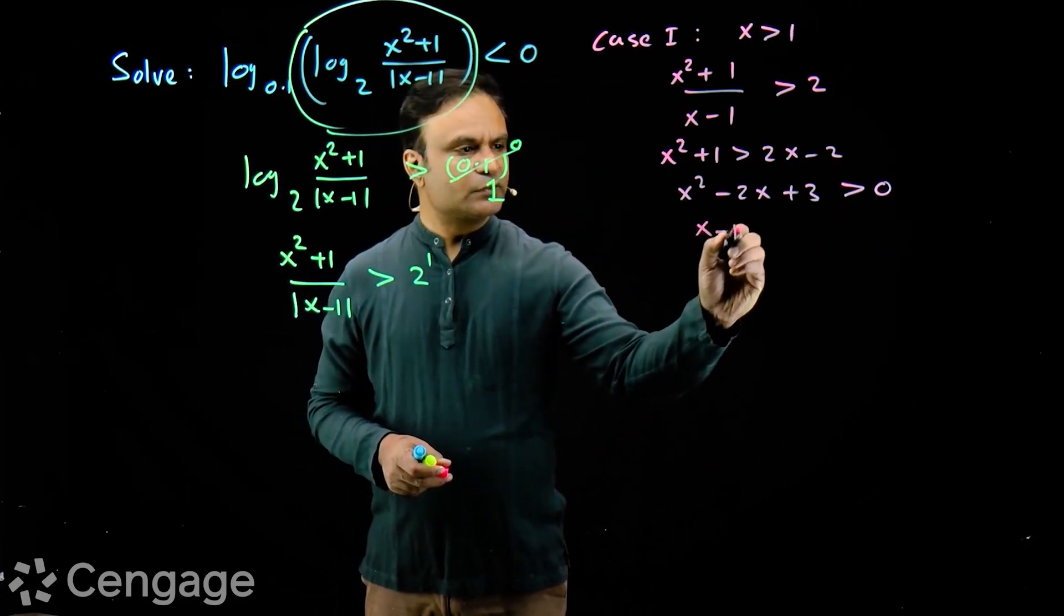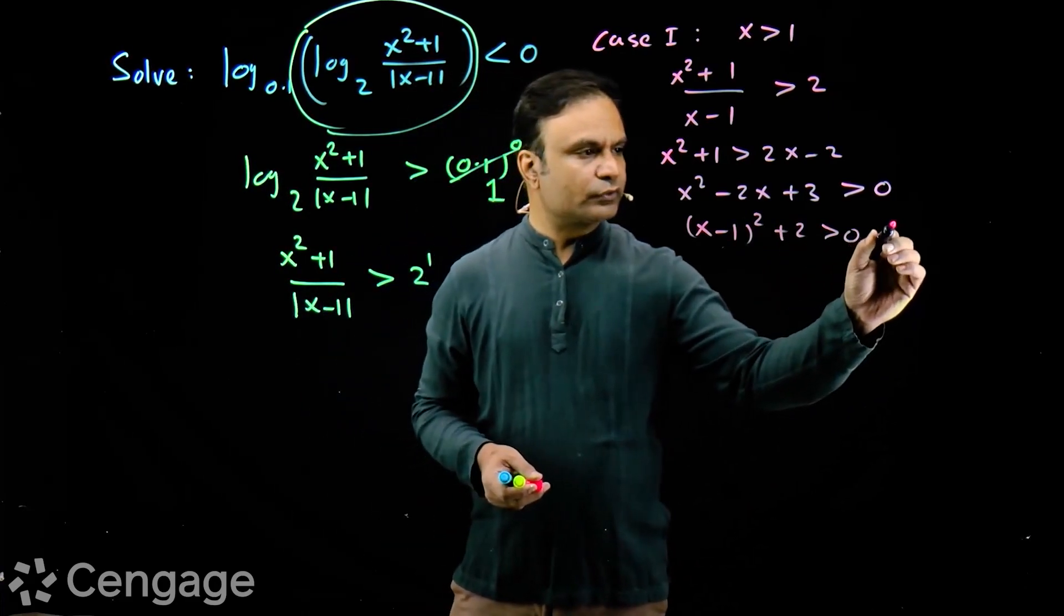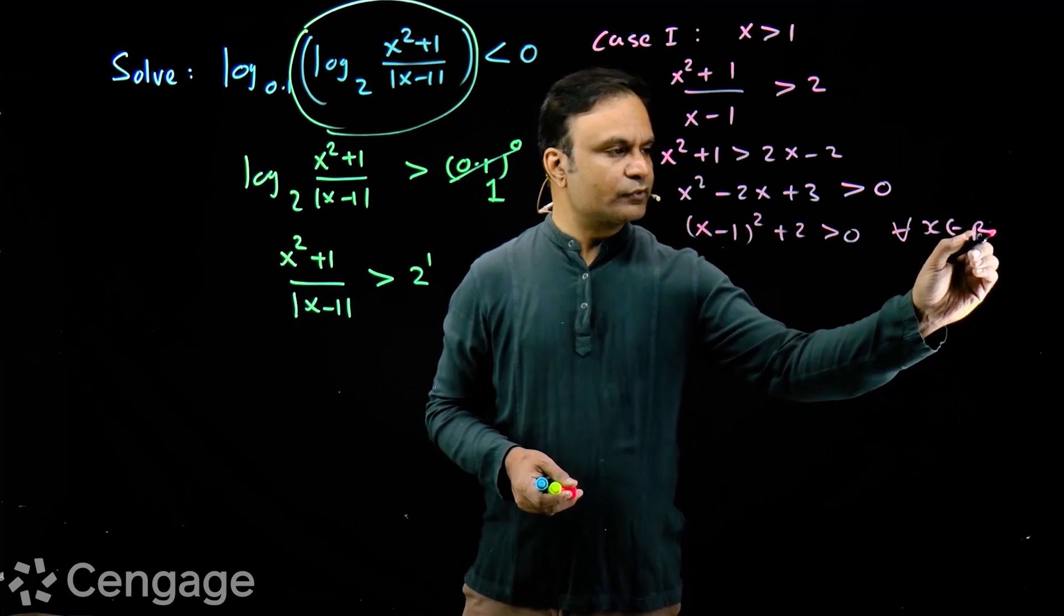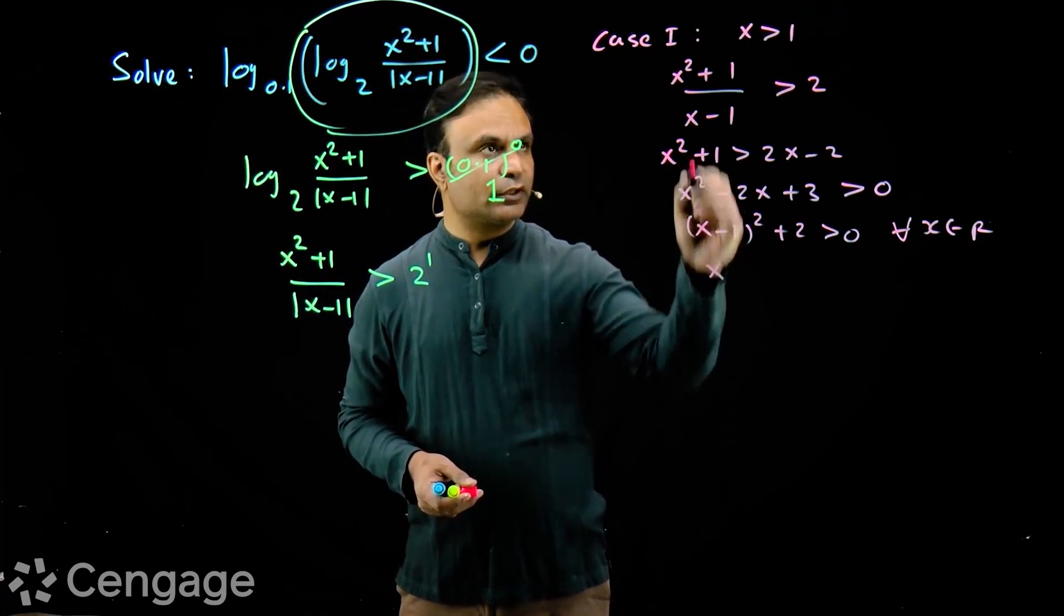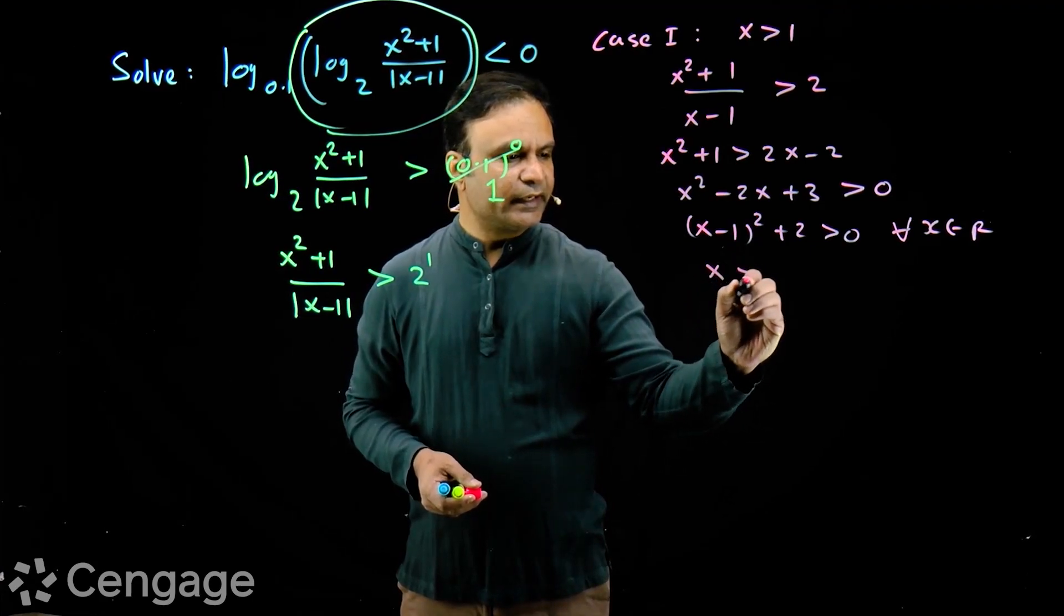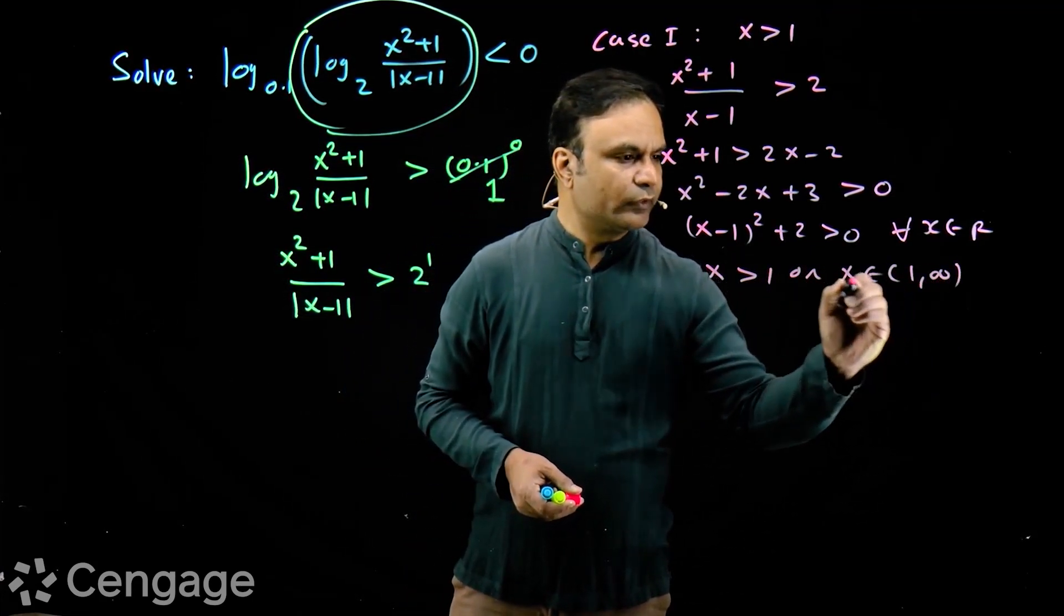We have x minus 1 square plus 2 greater than 0 and this is always true. This is true for all x belongs to R but we have x greater than 1. So solution from this case is x greater than 1 or x belongs to 1 to infinity.